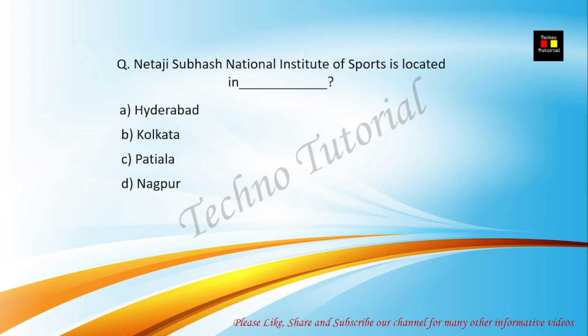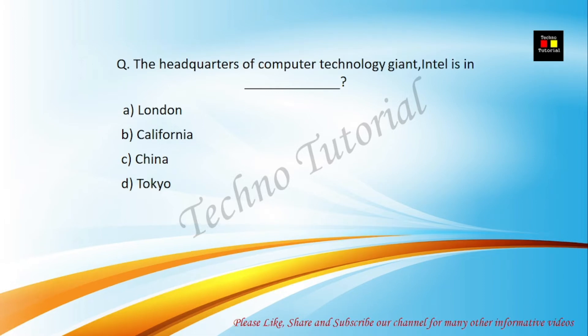Next question about a location — options include Hyderabad, Kolkata, Patiala, and Nagpur. The correct answer is Patiala. The next question: The headquarters of computer technology giant Intel is in — options are London, California, China, and Tokyo. The correct answer is B — California.